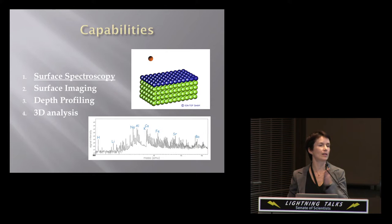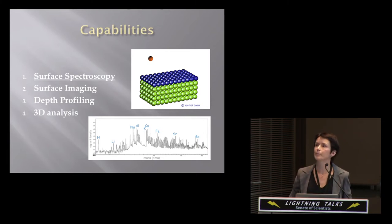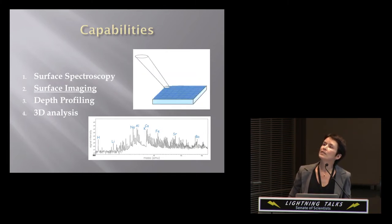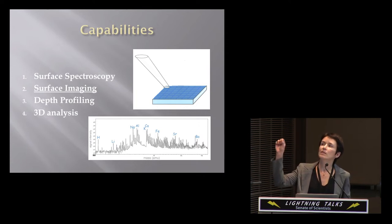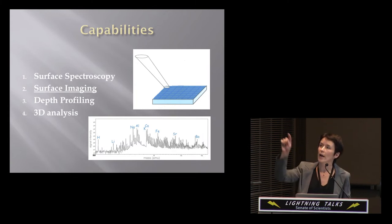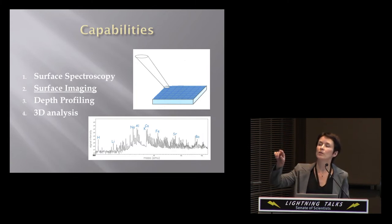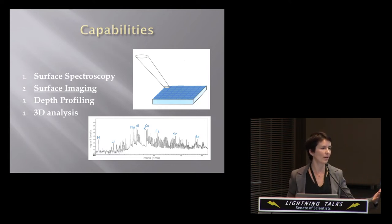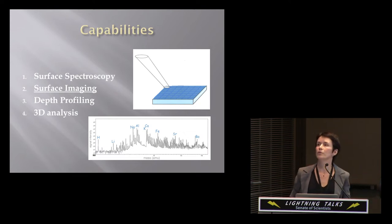You can map or analyze anything from hydrogen to mass 300 and higher. Doing the same thing for every pixel, rastering the beam over the surface, we get surface ion imaging. So for every little piece where the beam is, you get a spectrum, and you can extract your elements of interest and actually produce a map of the surface.